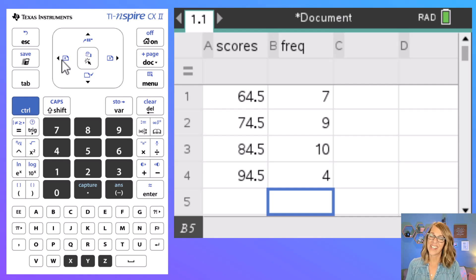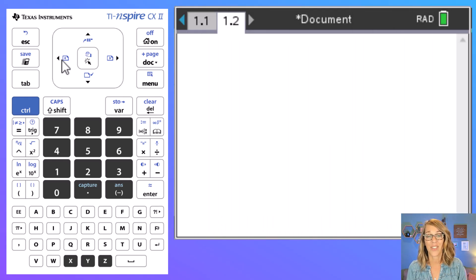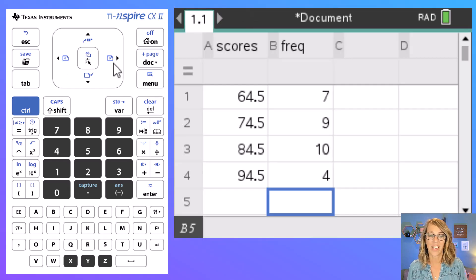To compute the statistics we're going to do one variable statistics. You can do this either on the spreadsheet screen where I am or you can do this on your calculator screen. I'm going to go ahead and do it right here in my spreadsheet and I do that by clicking menu first.